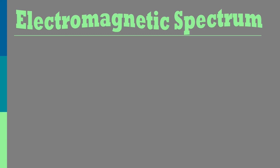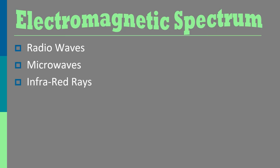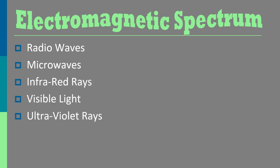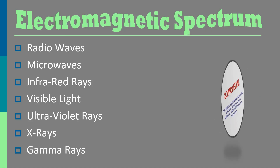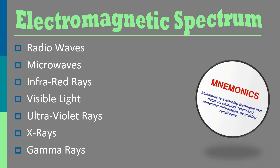We proceed with the different electromagnetic spectrum, which is composed of the different electromagnetic waves. We begin with radio waves, microwaves, infrared rays, visible light, ultraviolet rays, x-rays, and gamma rays. I'll be leaving you with a mnemonic device for you to be able to memorize, by heart and by mind, how these waves are arranged in the electromagnetic spectrum.